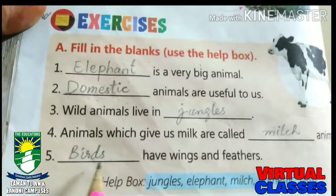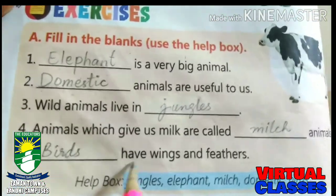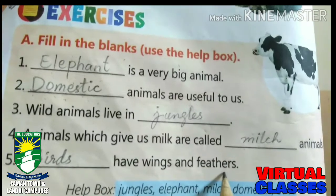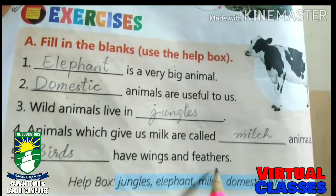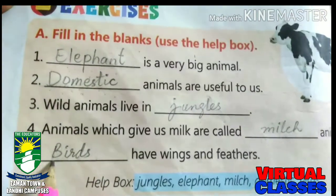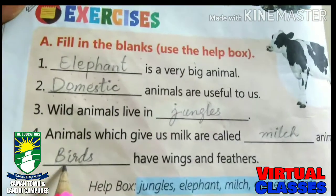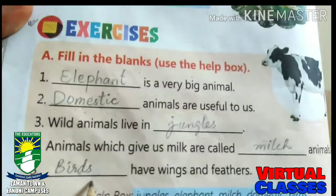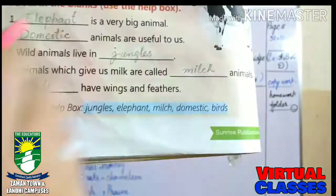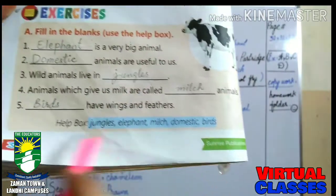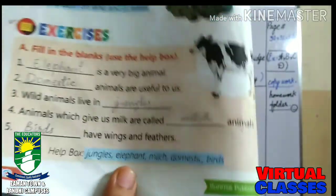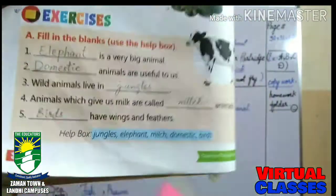Last blank: Dash have wings and feathers. The answer is birds. Spelling: B-I-R-D-S. Birds have wings and feathers. These all words are given here so you can also check them.